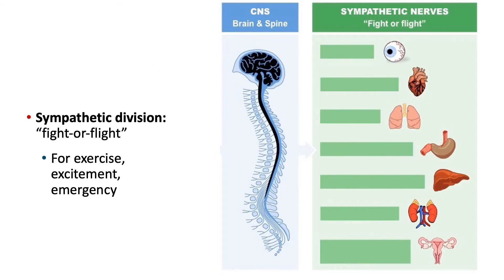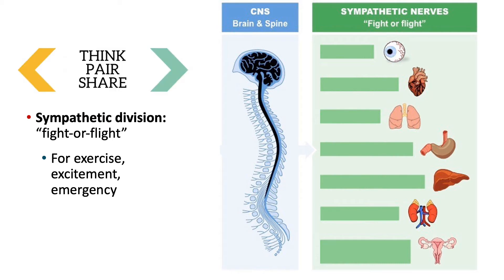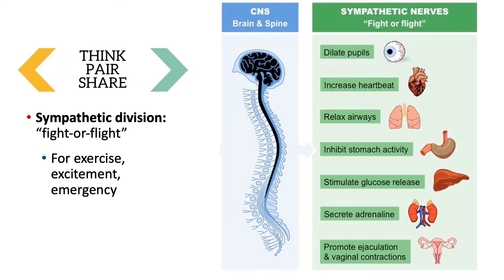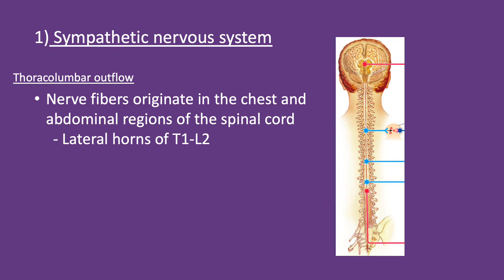The sympathetic division — fight or flight — maintains homeostasis during exercise or stressful/emergency situations, also known as the three E's: exercise, excitement, and emergency. Sympathetic responses include pupil dilation, increased heart rate, relaxed and dilated airways, inhibited digestion, stimulated glucose release from liver glycogen stores, secretion of adrenaline, and while arousal is parasympathetic, ejaculation and vaginal contractions are associated with a sympathetic response.